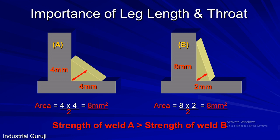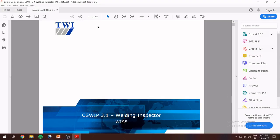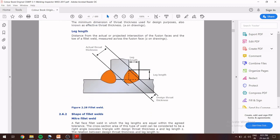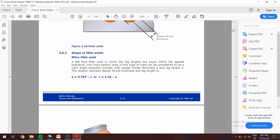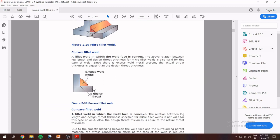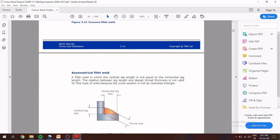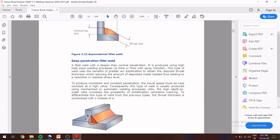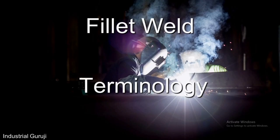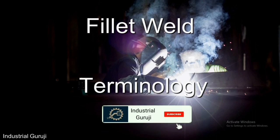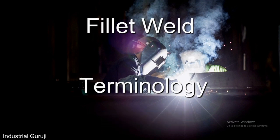So this is all about fillet joint terminology. Hope all of you have understood. These are very simple to understand and fun to learn. The terminologies and formulas explained are given in the CSWIP 3.1 welding inspector book. If you like this video, please like, share, and subscribe to my channel. Don't forget to hit the bell icon for updates, and please comment below on what topic you want for my next video. Thank you.